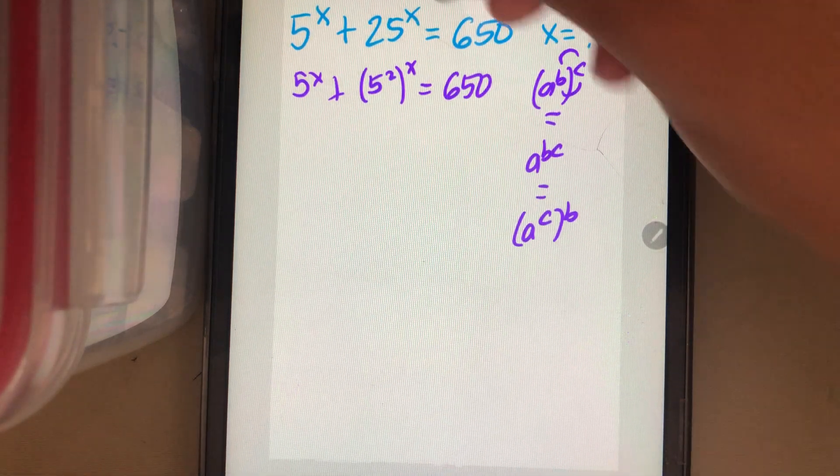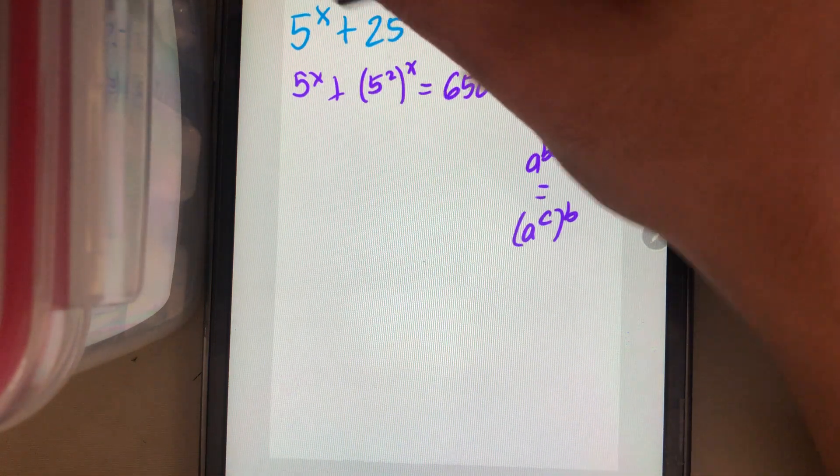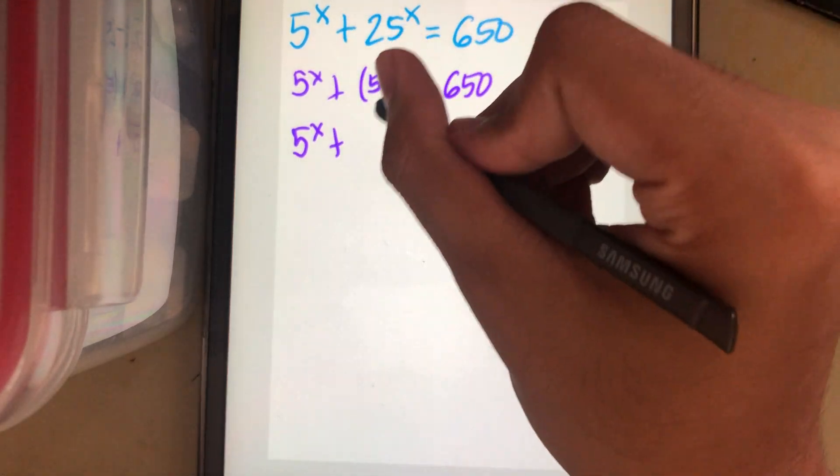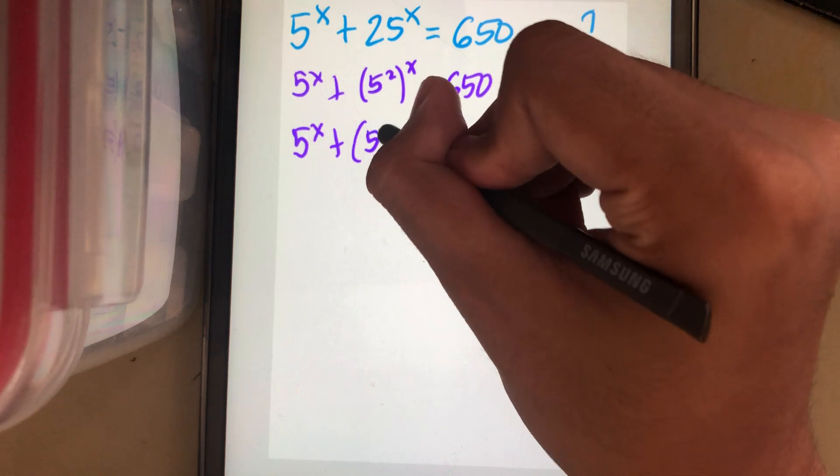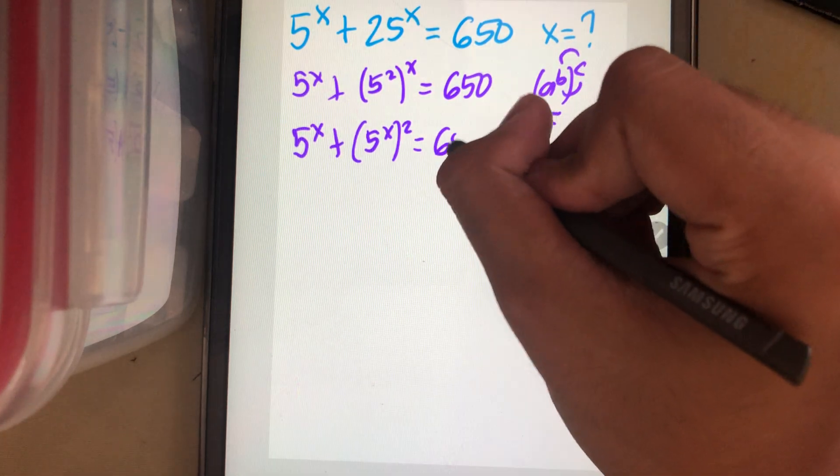The best thing to do with this 5 squared power x is to swap the x and the 2. So it becomes 5 power x plus the square of 5 power x equals to 650.